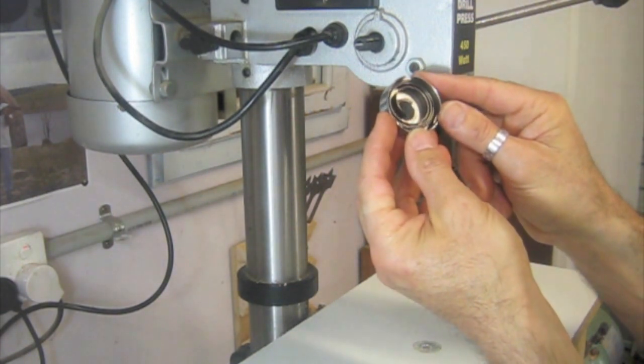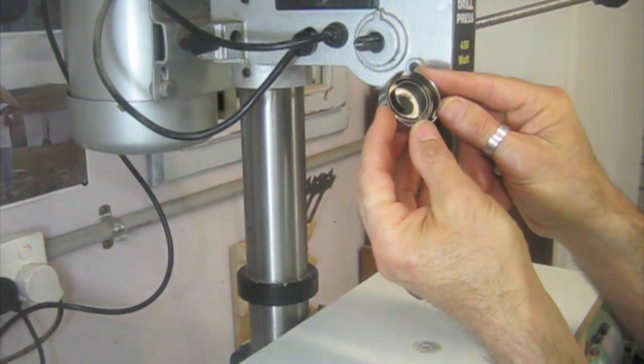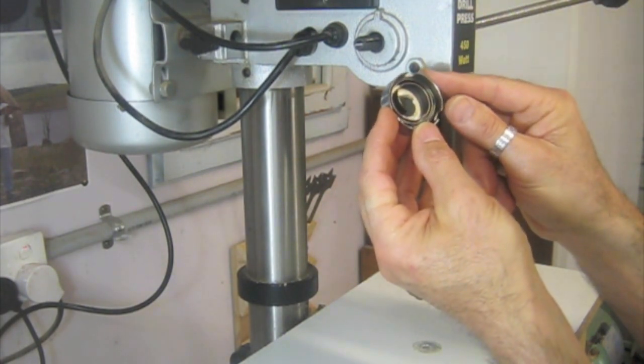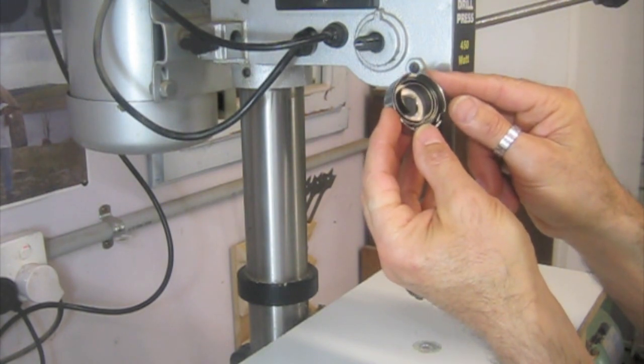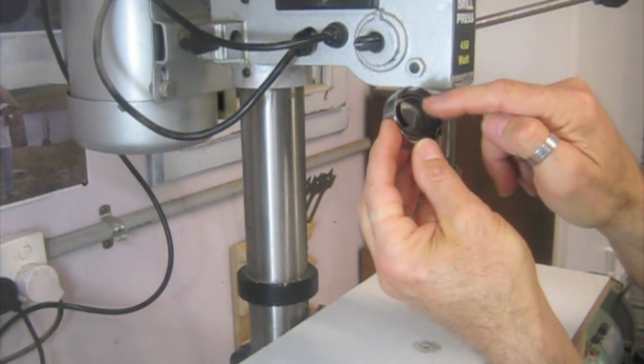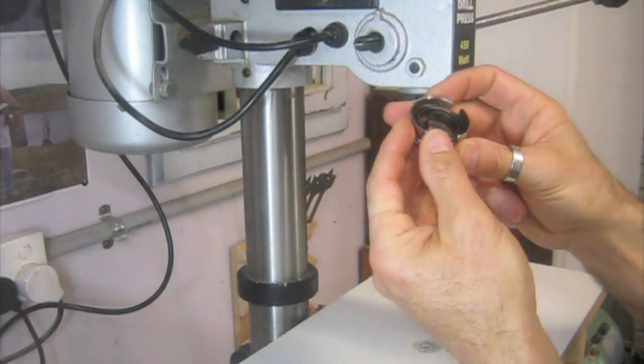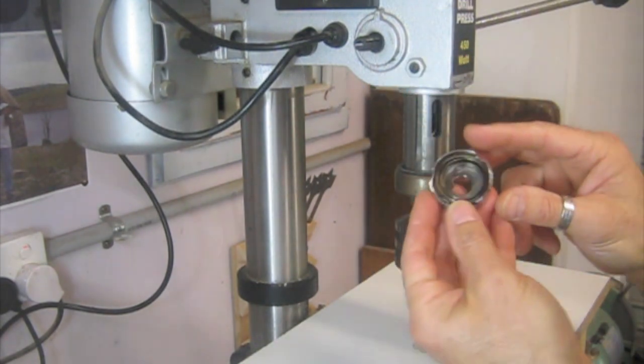Replacements are easily found. You go online. If you search quill spring or drill press spring, you'll get heaps of returns. And all you need to know is basically the diameter size of this cover and the width of the spring.